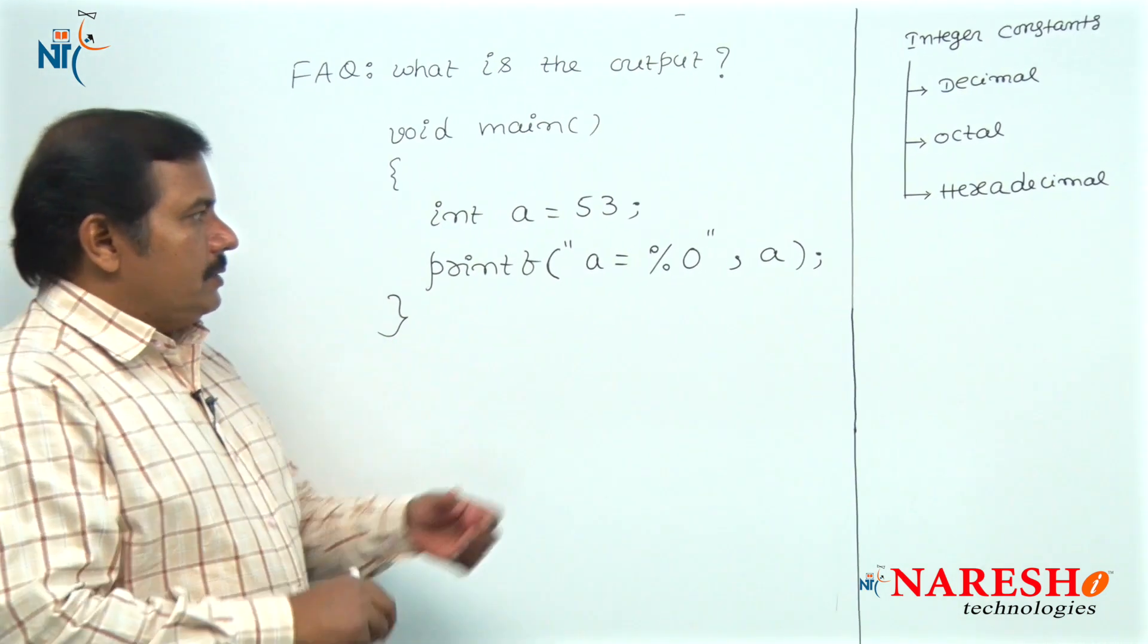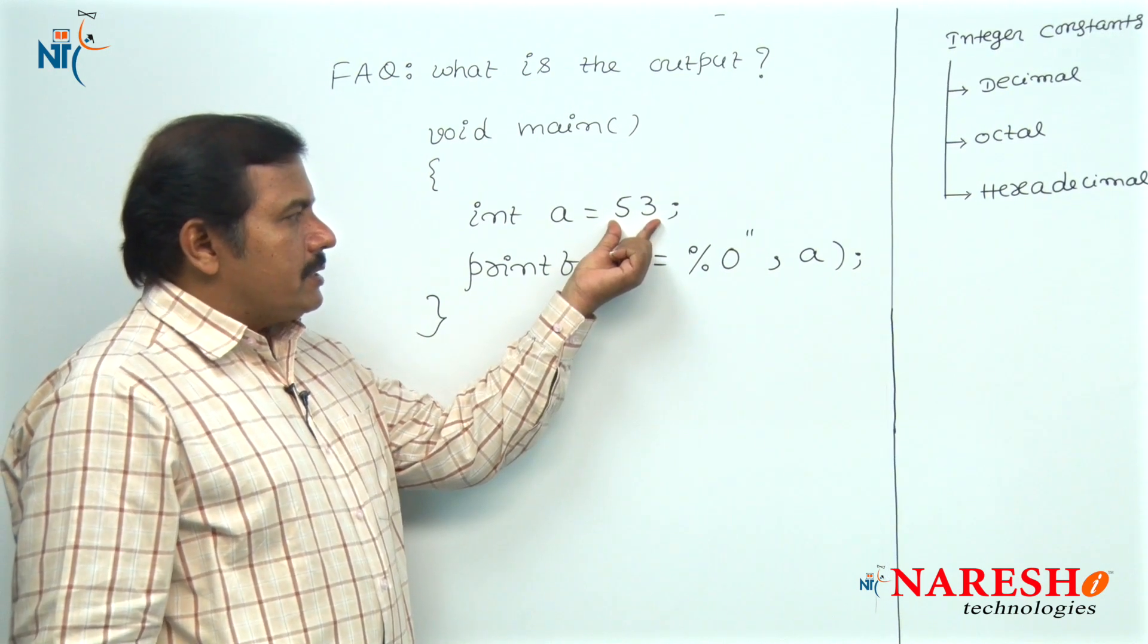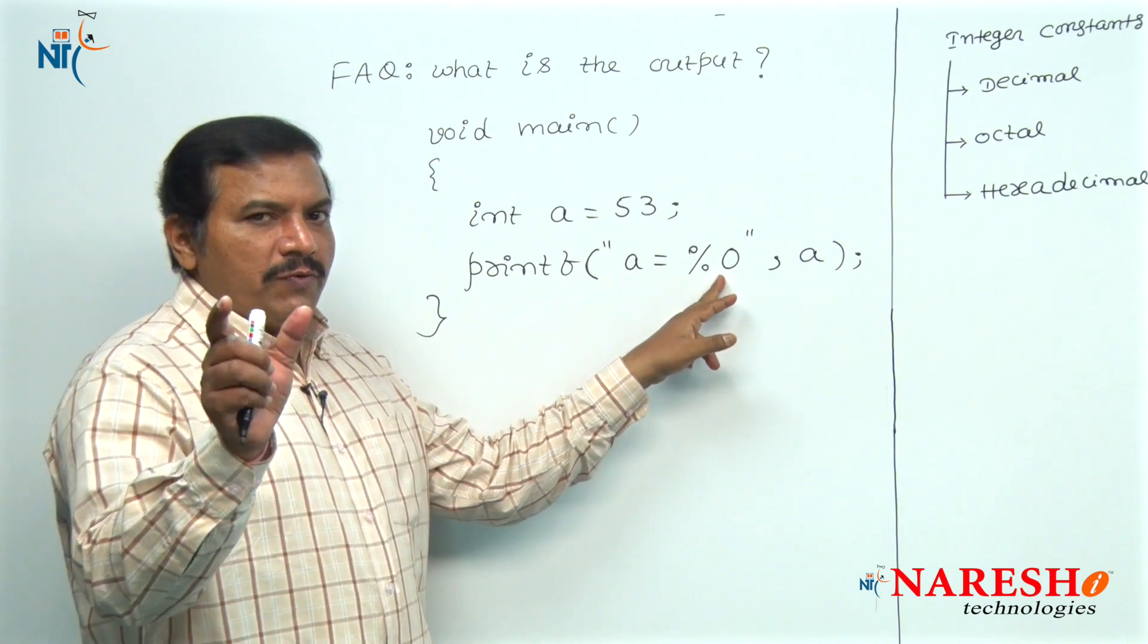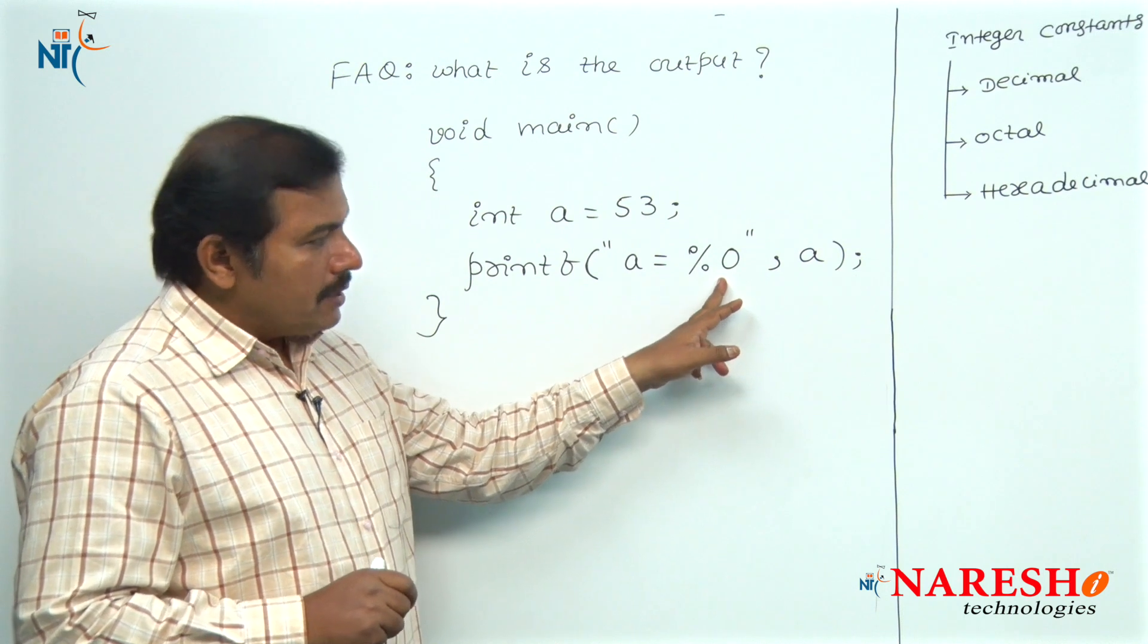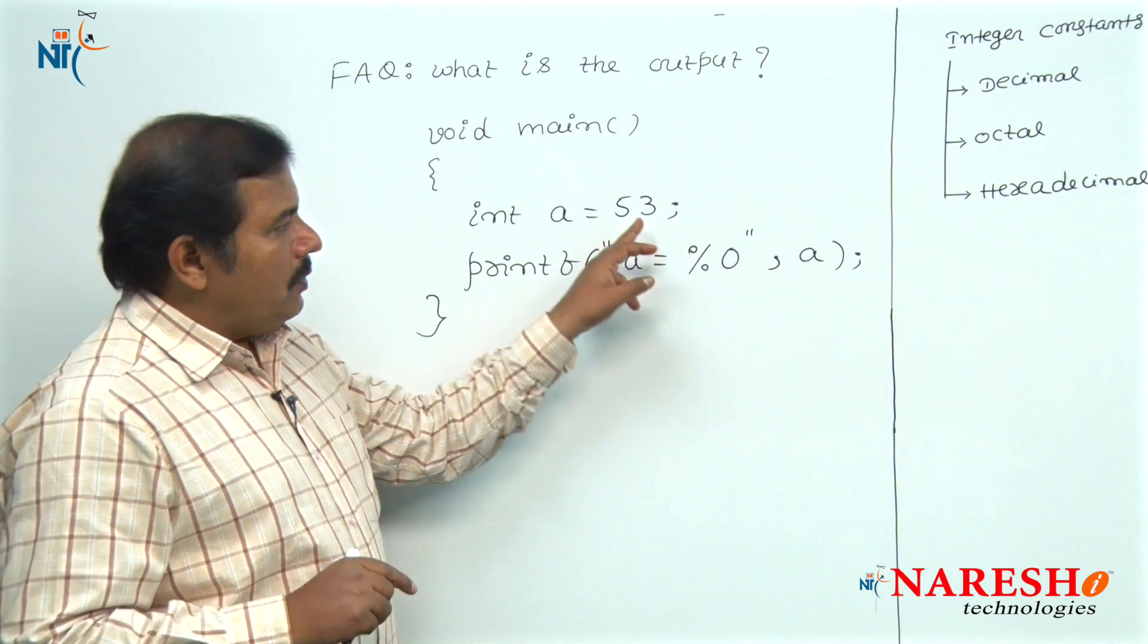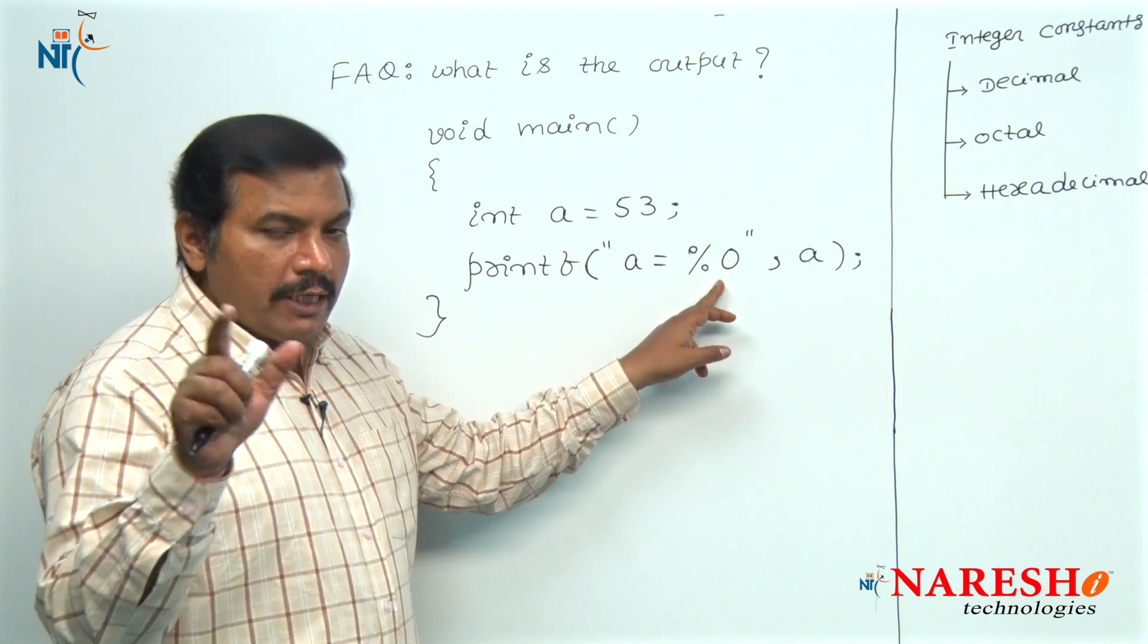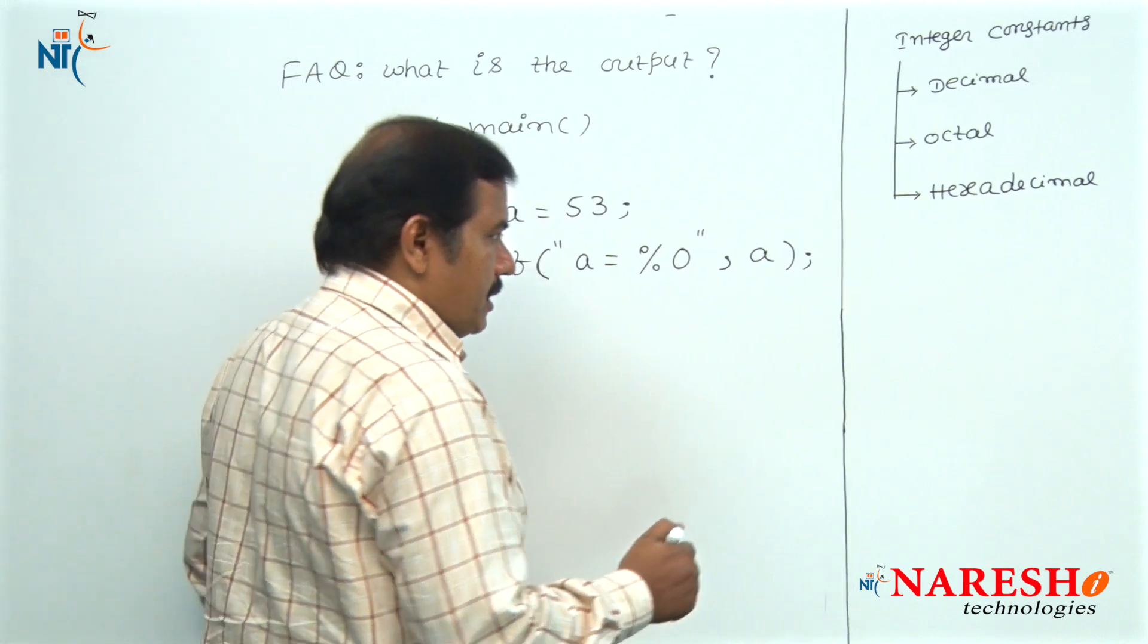In this given code, to print a decimal integer constant, actually the format specifier should be used is percent D. But in this code given, octal format specifier O. So, convert the decimal integer 53 into its equivalent octal. That value is printed on to the screen.